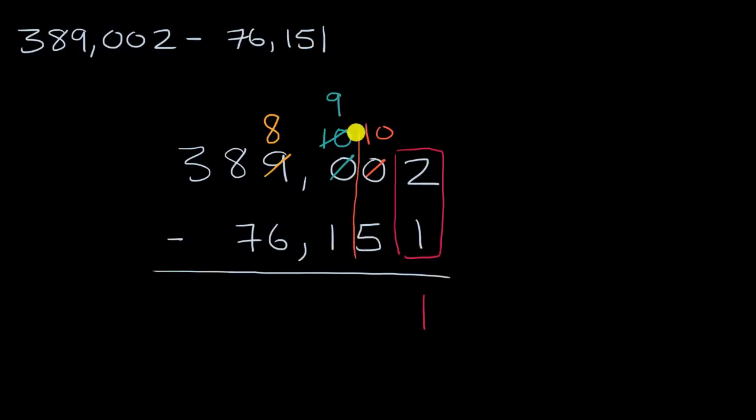So in the tens place, ten tens minus five tens is five tens. I go to the hundreds place, nine hundreds minus 100 is 800. I go to the thousands place, eight thousand minus six thousand is two thousand.